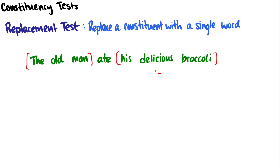We can go even further. What about 'old man'? We can replace 'old man' with another word, like 'dog' — so 'the dog ate his delicious broccoli.' Because 'old man' is a noun phrase with an adjective modifying it, we can replace it with another noun. Therefore, 'old man' functions together as a unit. Same with 'delicious broccoli' — we can say 'the old man ate his cold fish,' replacing 'delicious broccoli' with another noun phrase. Because we can replace it, we know it's a constituent by the replacement test.